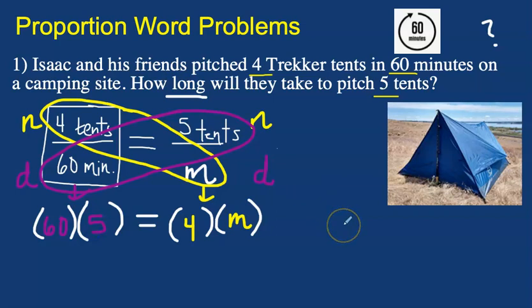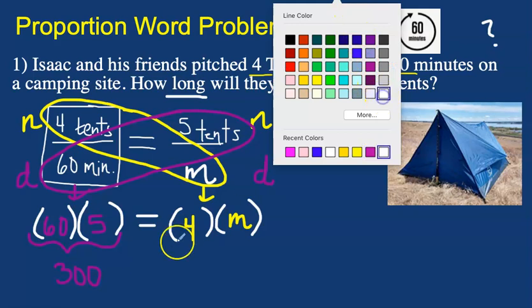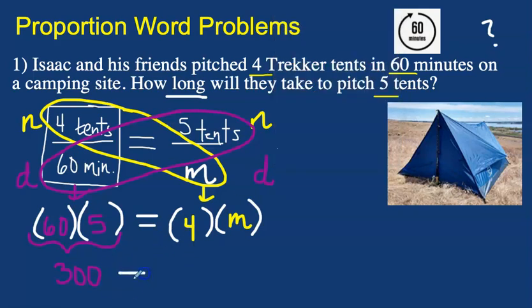And then I'm going to multiply across this direction. And I'll multiply 60 by 5. Now today, for all of these problems, you're allowed to use a calculator. So I'm going to go ahead and, I would type it in my calculator, but I can just tell you what the answer is. 60 times 5 is 300. And then 4 multiplied by m is 4m. So we've done the part where we cross multiply, and we've gotten our cross products.